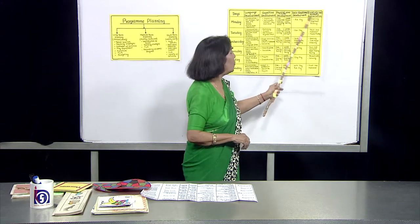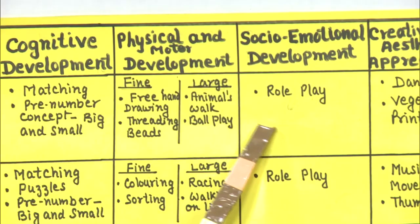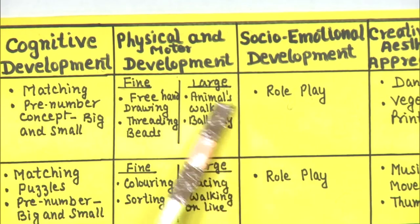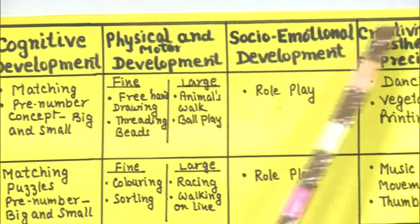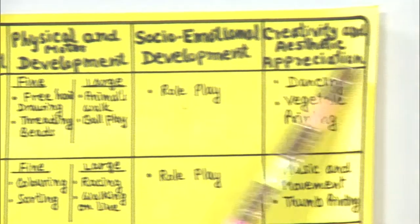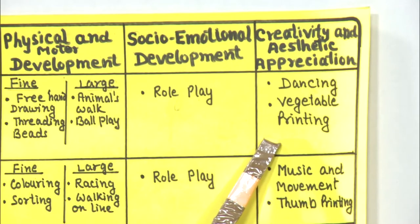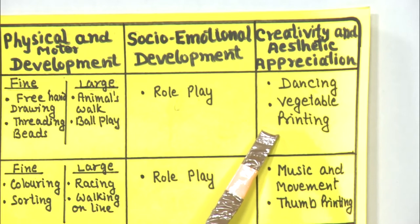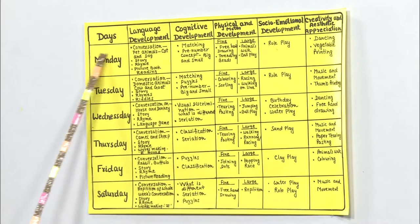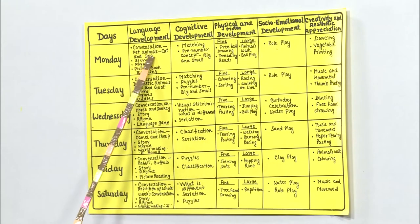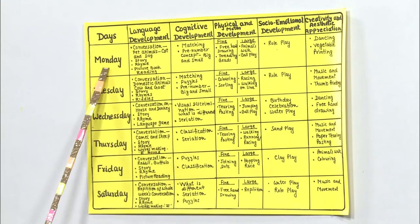For socio-emotional development, we can do role play on Monday. For creativity and aesthetic appreciation, we can ask children to dance and do vegetable printing. These are the activities we are going to do on Monday.